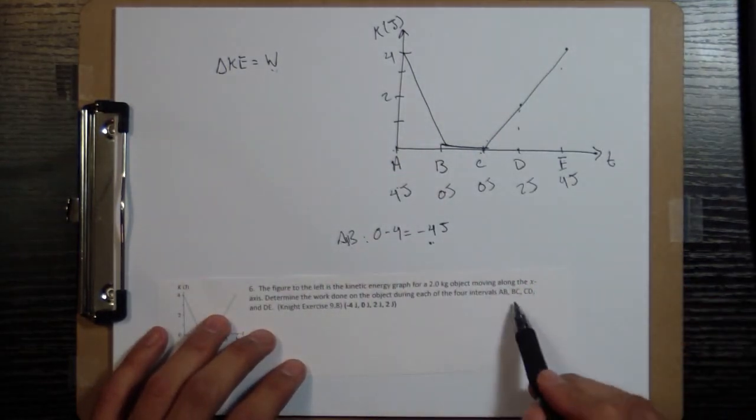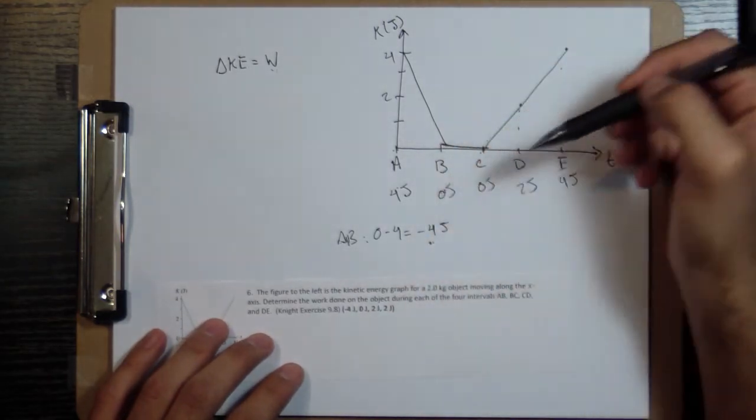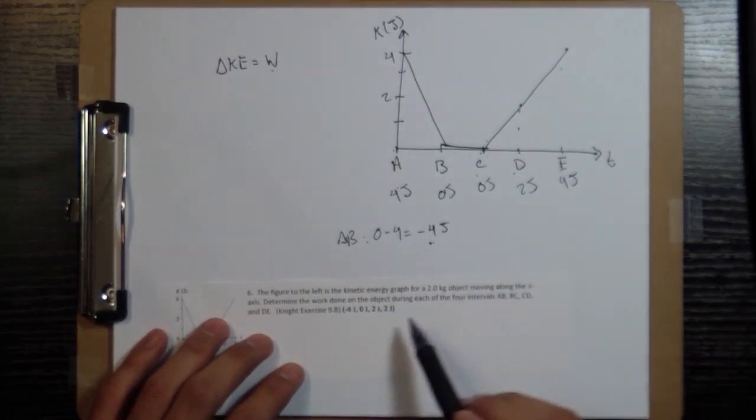And do the same thing for all the other ones. B, C, so you do C minus B, zero minus zero, you're going to get zero. C, D, you're going to do D minus C, two minus zero, two minus zero is two.